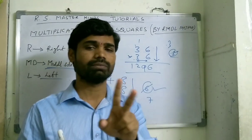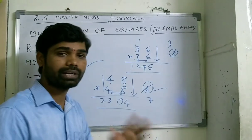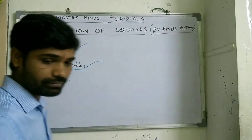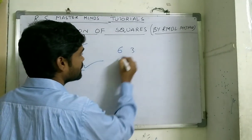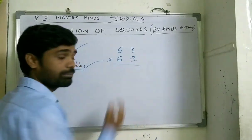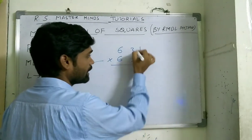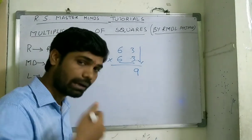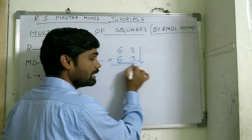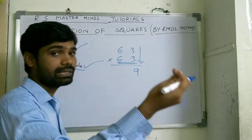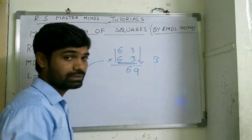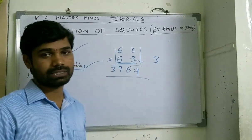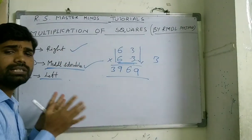So guys, you can find any square within just 2 seconds. Let's take one more example: 63 into 63. R: 3 times 3 is 9 — write 9. MD: 6 times 3 is 18, double it to get 36 — write 6, carry 3. L: 6 times 6 is 36, plus carry 3 gives 39. So the answer is 3969.